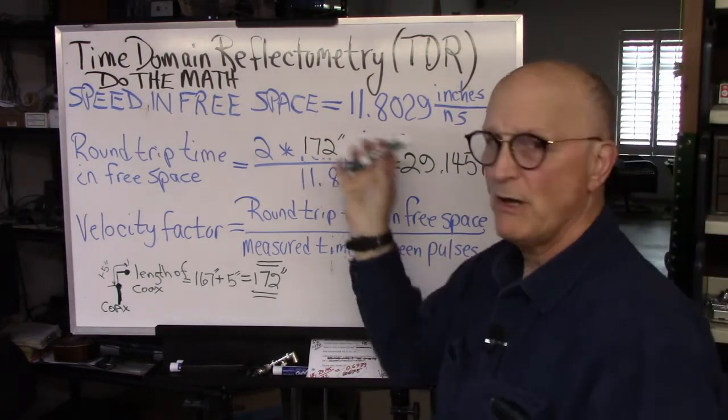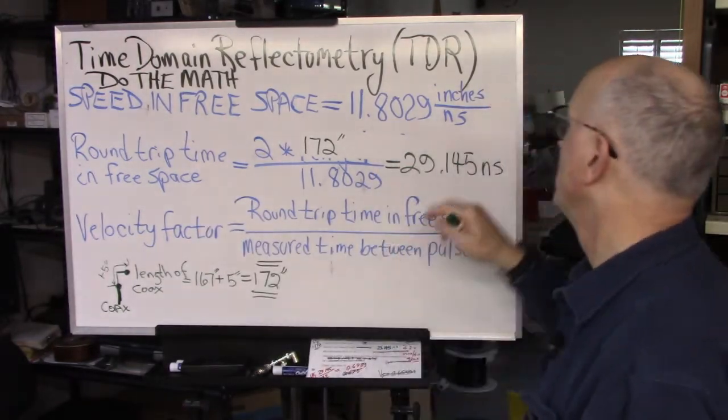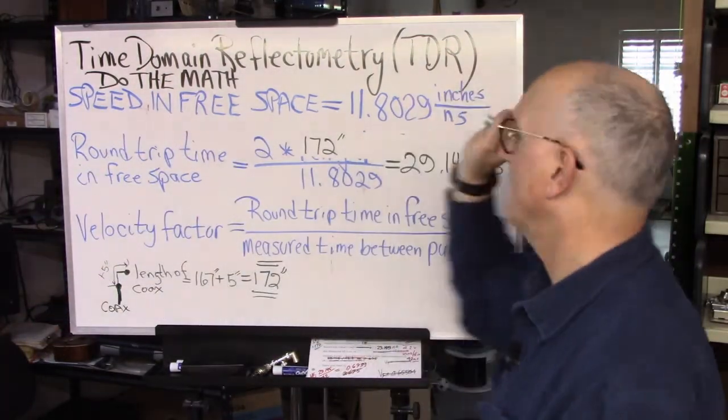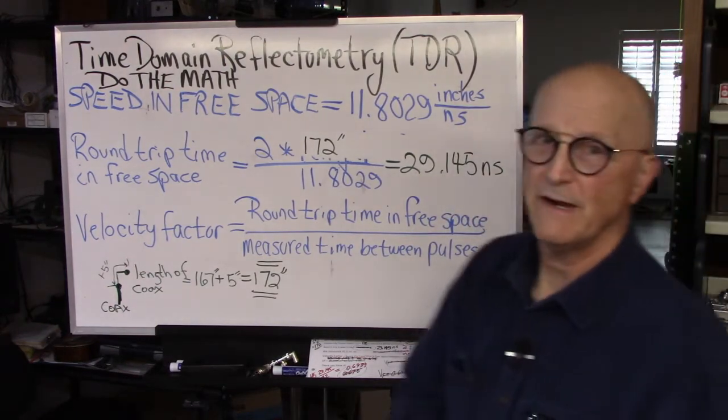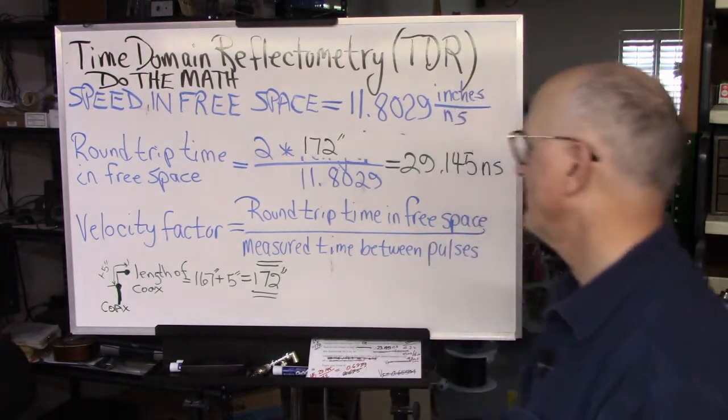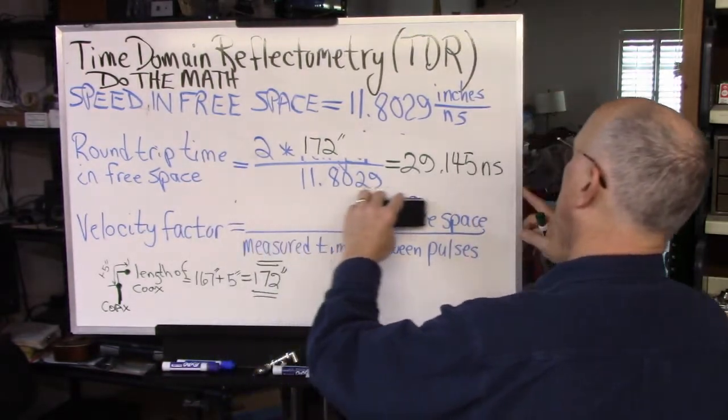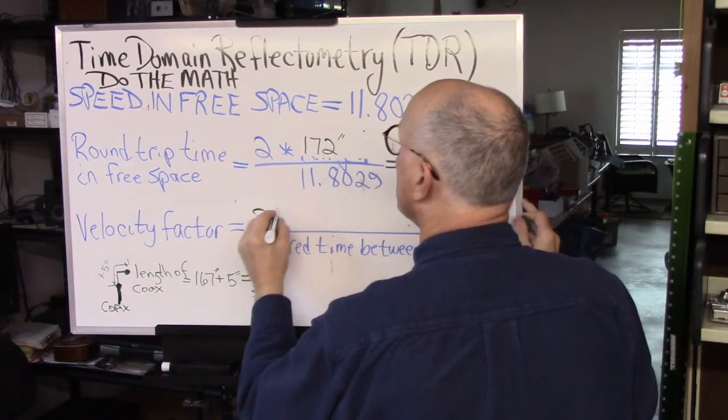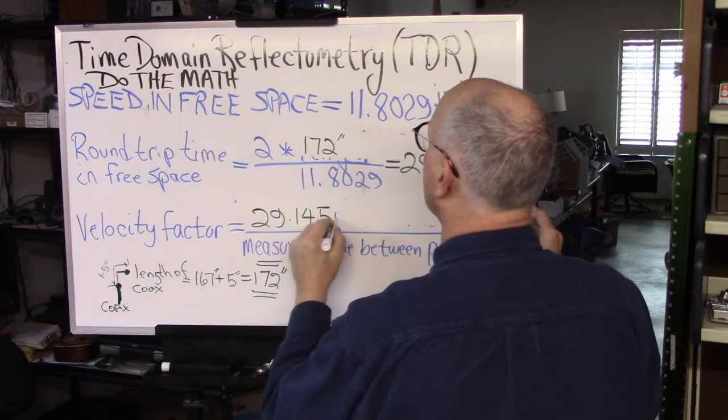So if this pulse was traveling in free space, unencumbered, to go out to the end of the coax and back again, would be only 29.145 nanoseconds. But the reality is, it's traveling more slowly than that. So the round trip time in free space then is 29.145 nanoseconds.